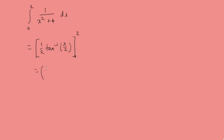So then we get a half inverse tan of 2 over 2 is just 1, minus a half the inverse tan of 0. And that then gives us a half times pi over 4 minus a half times 0, so we will get pi over 8.